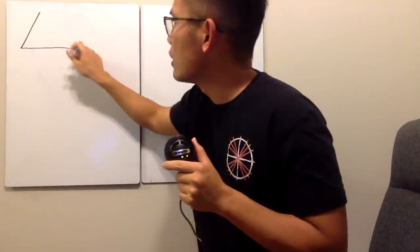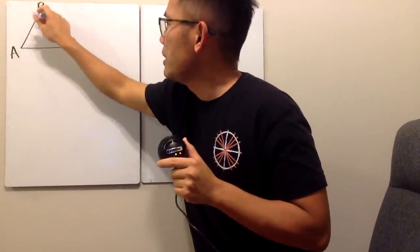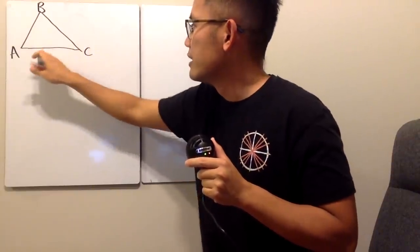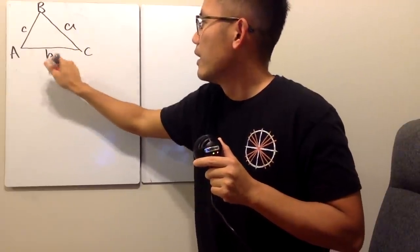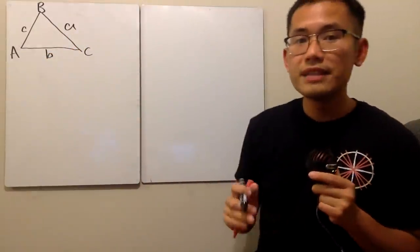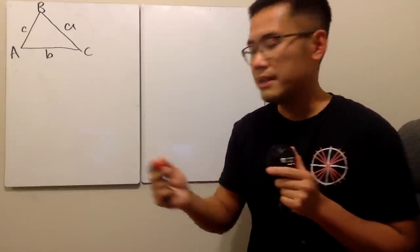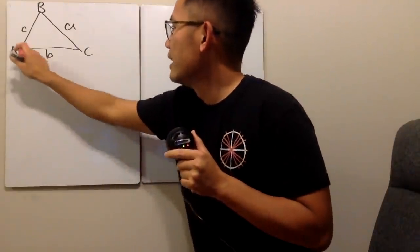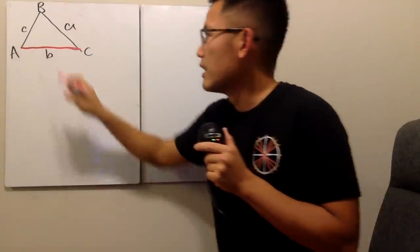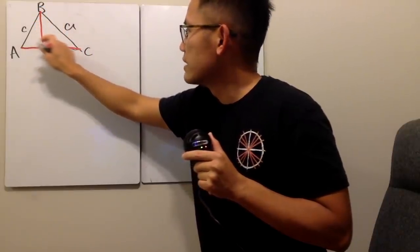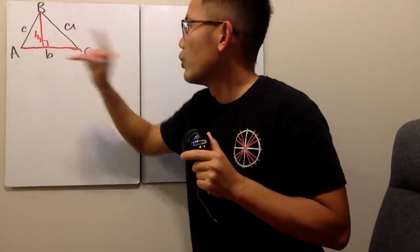Let me draw a picture right here, and I'm going to label this to be capital A, capital B, and capital C. This right here will be little b, this right here will be little c, and this right here will be little a. So this is how we are going to start. First, we pick a side to be the base, so let's go ahead and just pick this to be the base. Then we draw a perpendicular line from this point, and of course this is going to give us the height, so I'll put down h1 right here.